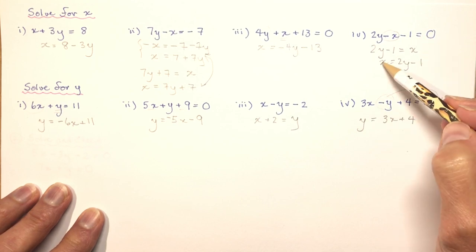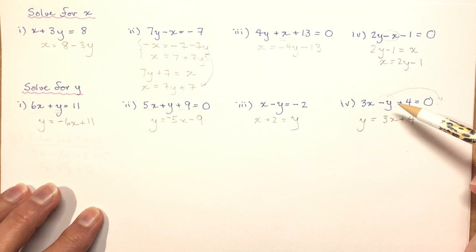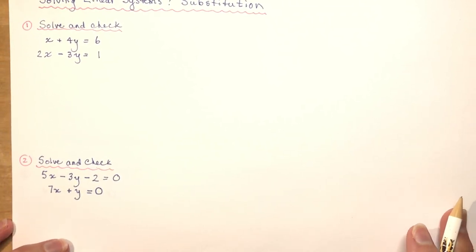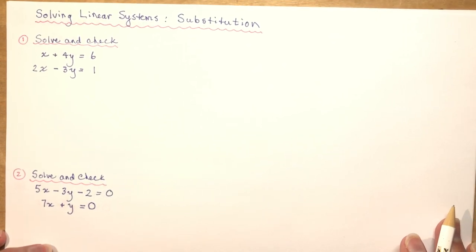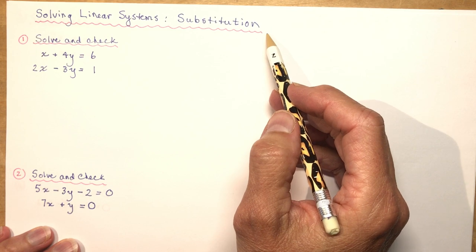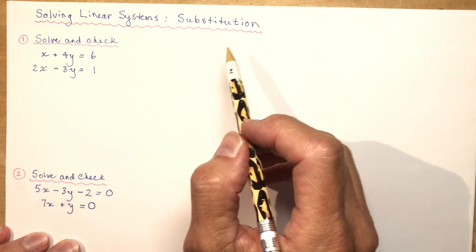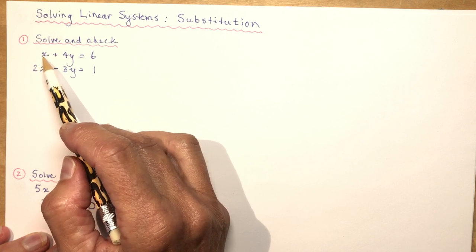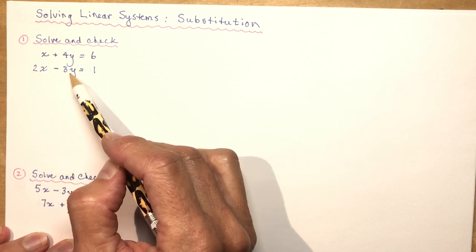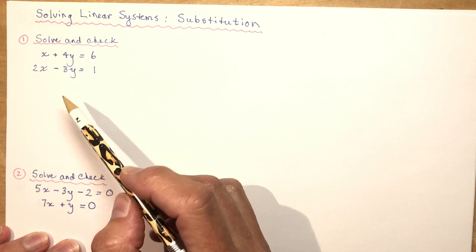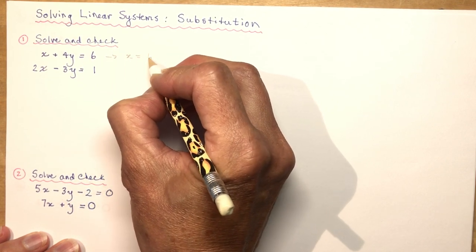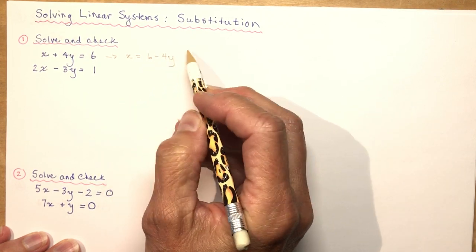It's very important that you're capable of isolating the variable before you start substitution questions. We're solving a linear system — finding the point of intersection, like we did by graphing. Substitution works really well when you have a variable with a coefficient of 1. For example, x plus 4y equals 6 easily gives x equals 6 minus 4y.